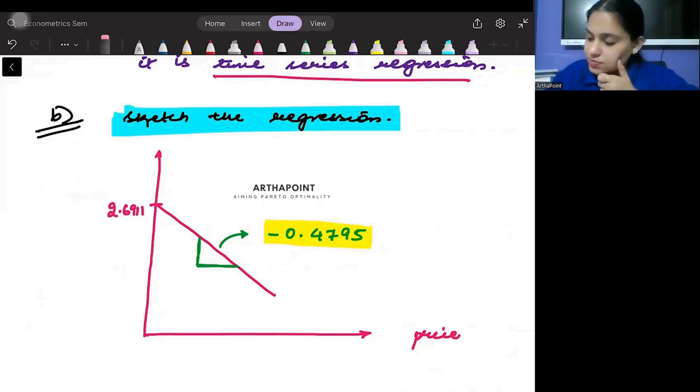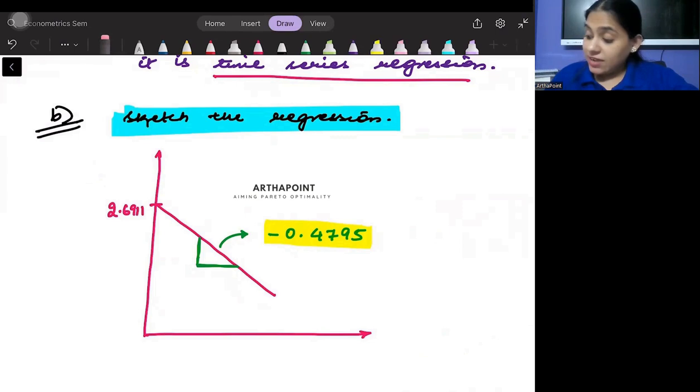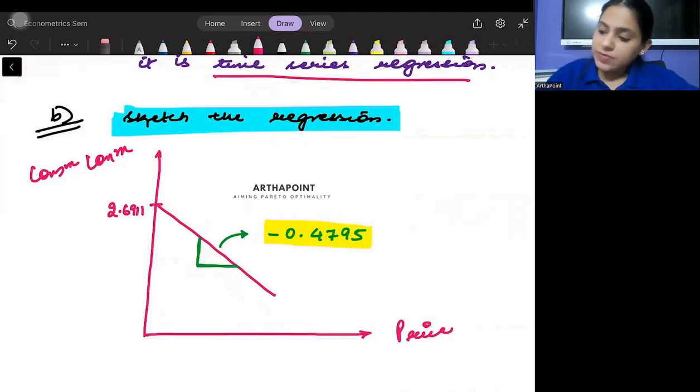Actually, I should just revert it - I should be writing price here. I have price on the Y-axis and coffee consumption on the X-axis. Price is the independent variable; we always take price on the Y-axis when we draw inverse demand functions. In econometrics that's not required, so I have coffee consumption on the Y-axis and price on the X-axis.